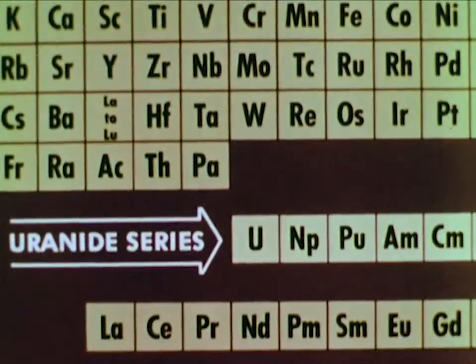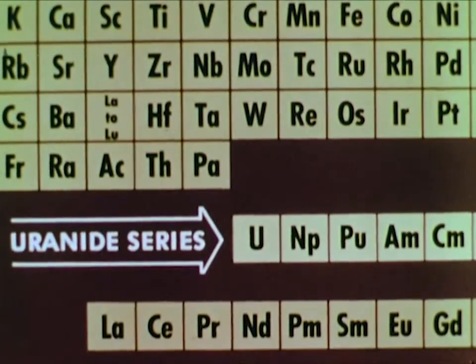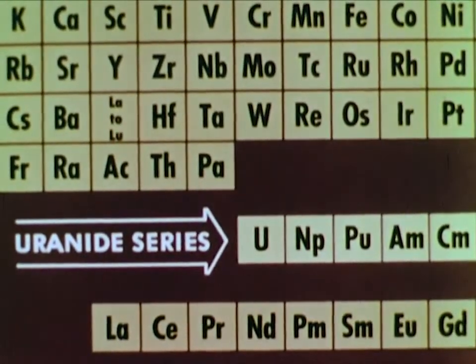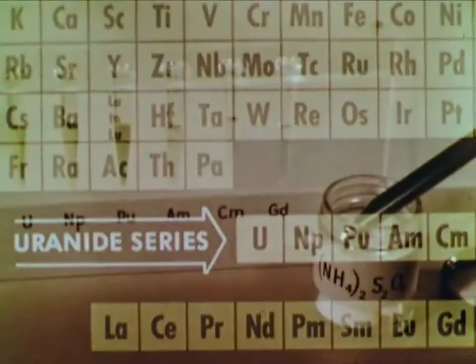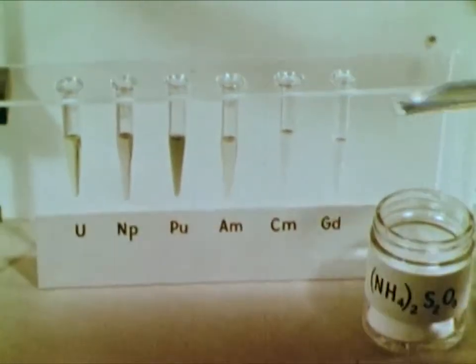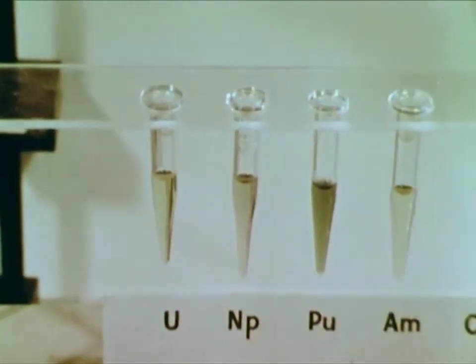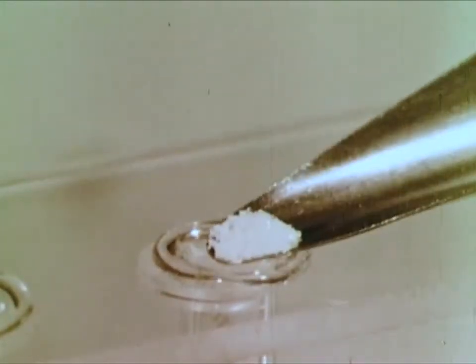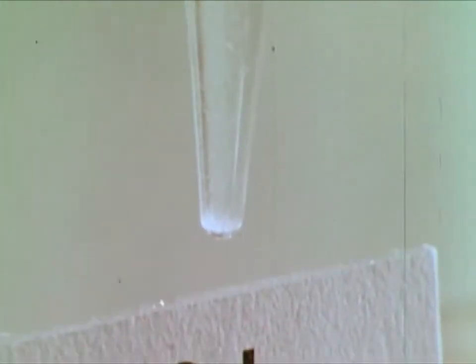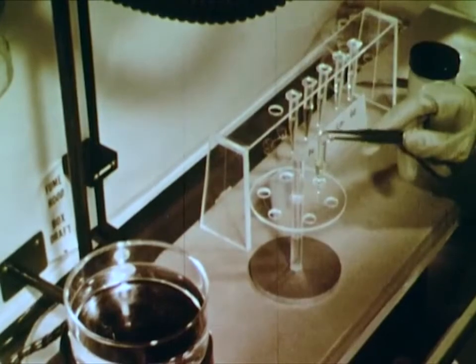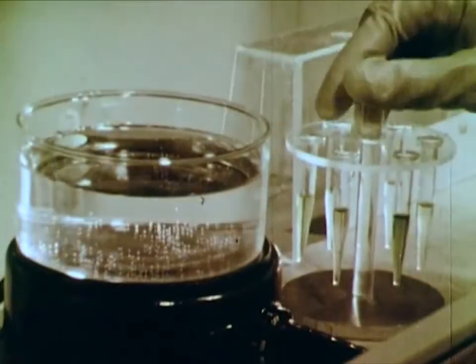Before we proceed, let us take a look at the version of the periodic table which is based on the notion of a uranide series. This arrangement suggests that the transuranium elements ought to exhibit oxidation states similar to those of uranium. Let's test this idea experimentally. We'll add a strong oxidizing agent — persoxydisulfate — to each of our solutions of the transuranium elements. We'll also add the oxidizing agent to the gadolinium nitrate. Now we'll heat the solutions and allow plenty of time for the oxidizing agent to act.